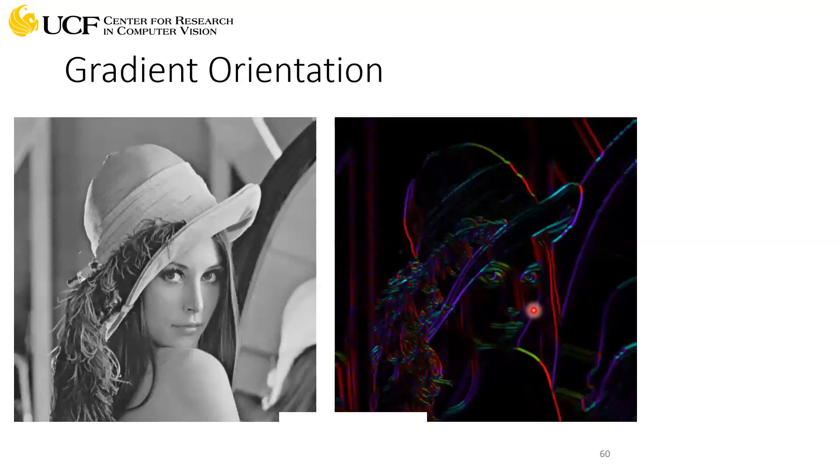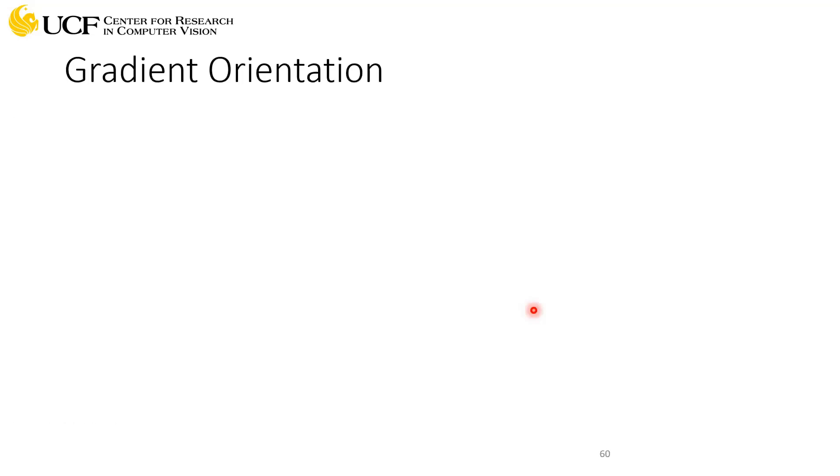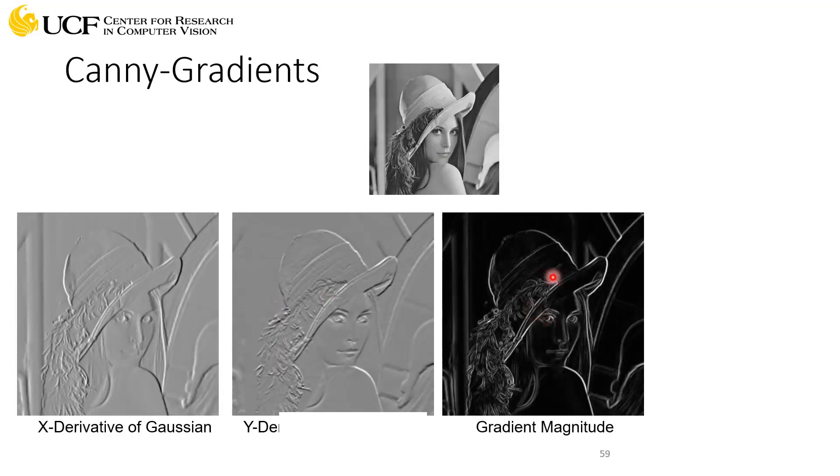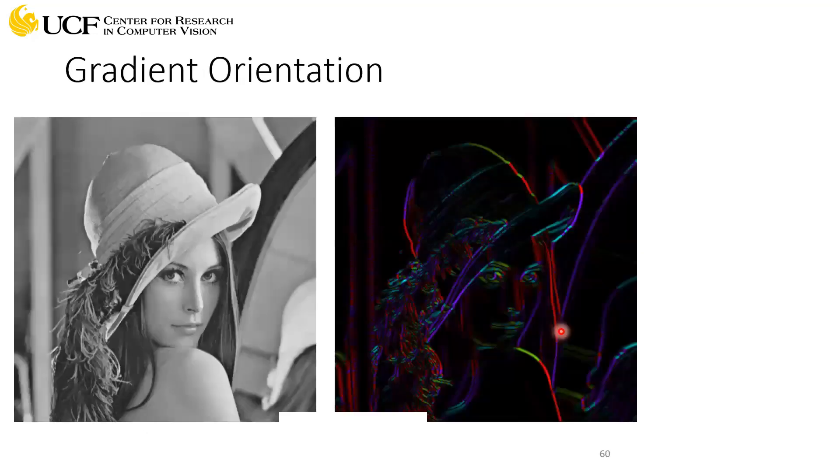This is something new. So once you have these edges, what we do is we try to find the orientation of the edges, which means in which direction we have edges in the input image. This is just one visualization, and essentially what's happening at each pixel location is we are trying to determine in which direction the edge actually lies. We're trying to find the orientation, and you know the formula to compute that.